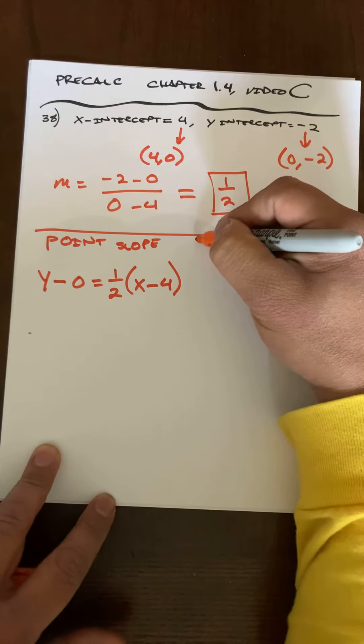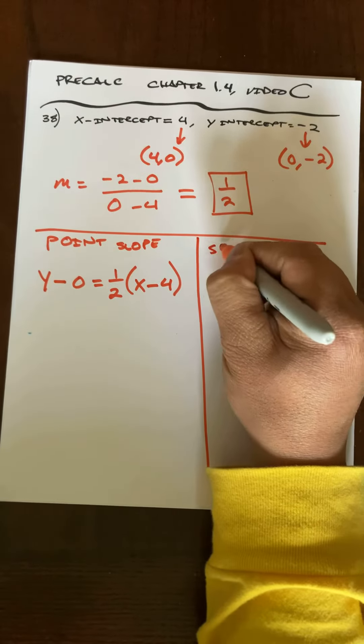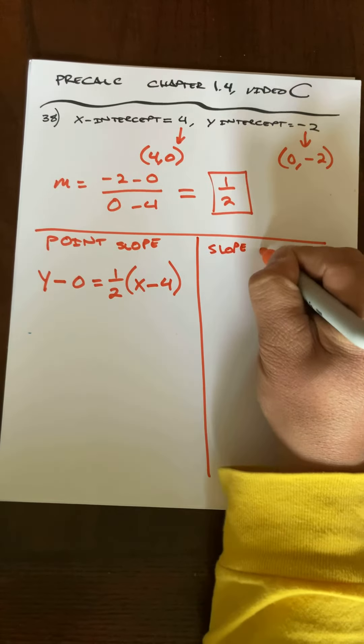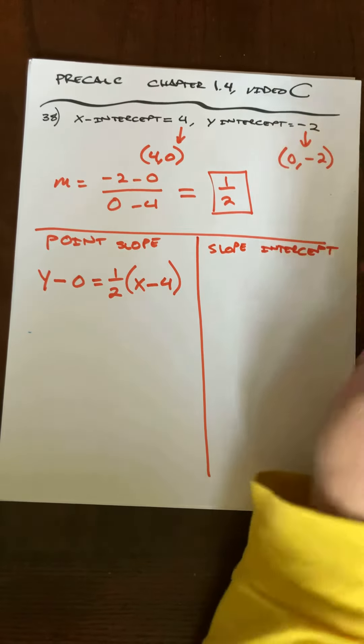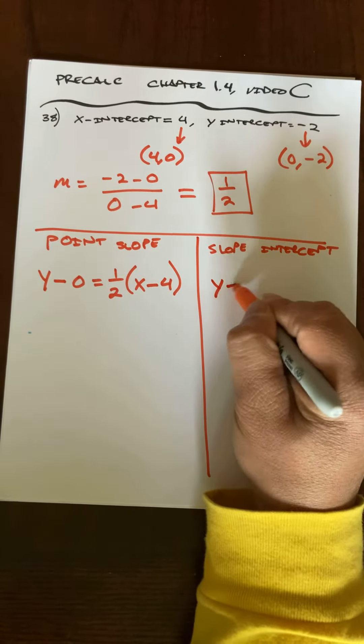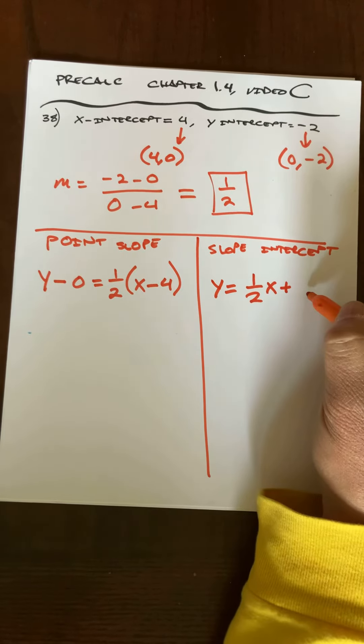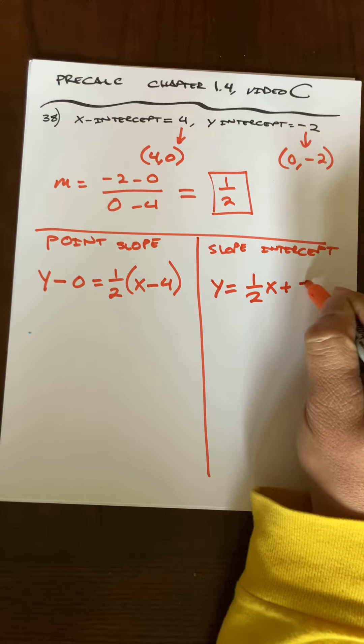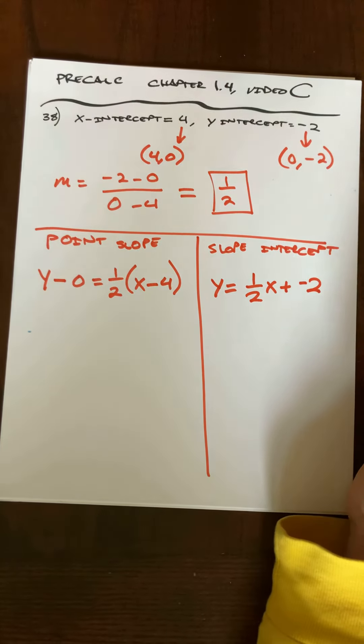Okay, and slope-intercept form is even easier because I just get y equals m, our slope, times x plus b. B is our y-intercept, so that's just -2. Okay, and that's it.